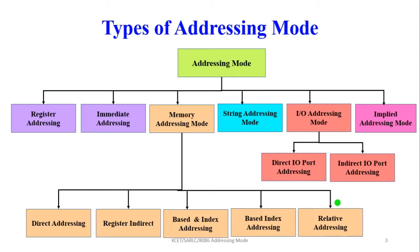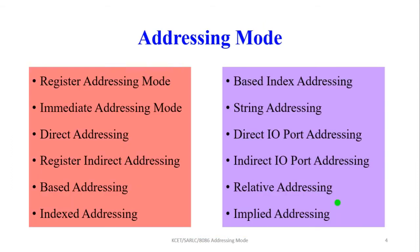The 8086 microprocessor addressing modes are grouped into six categories. The first is register addressing; second, immediate addressing; third, memory addressing mode — which includes direct addressing, register indirect addressing, based and index addressing, based index addressing, and relative addressing. Next is string addressing mode, then input and output addressing mode — with direct I/O port and indirect I/O port addressing — and finally implied addressing mode.